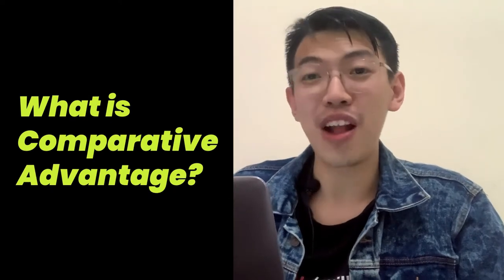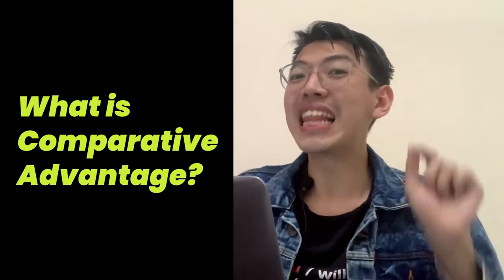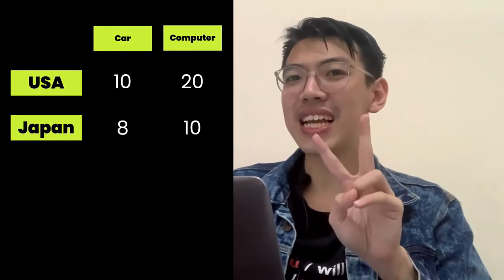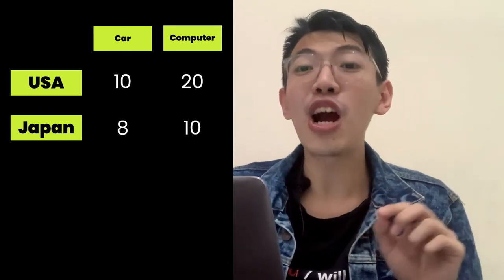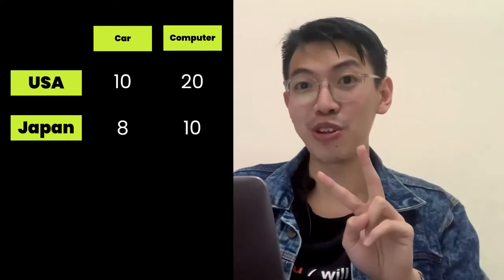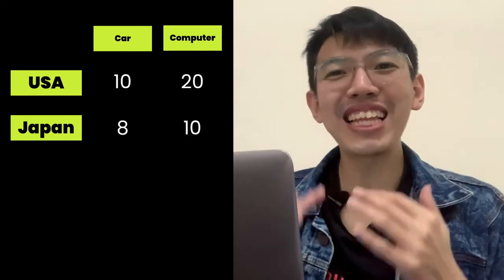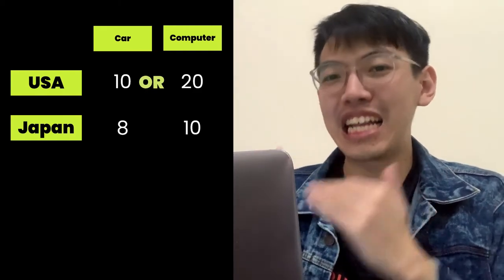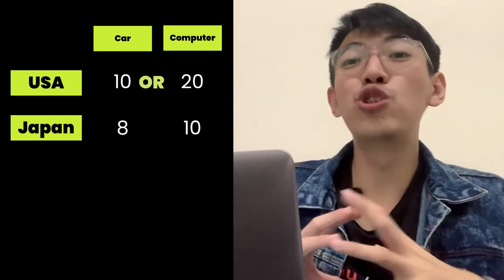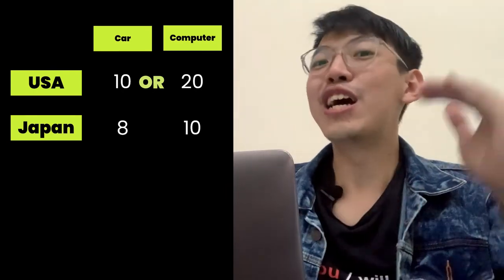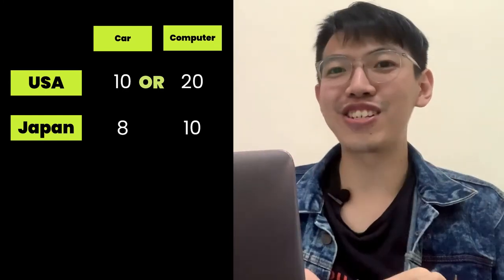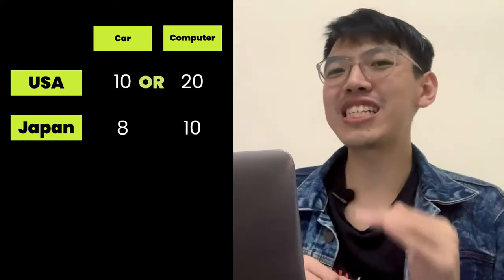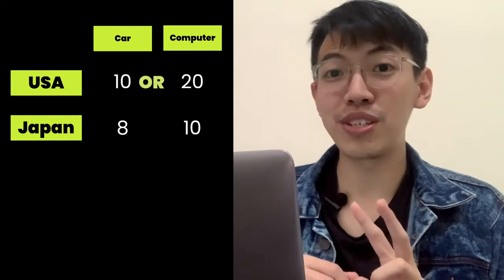What is comparative advantage? To make you understand better, let's see this illustration. Suppose there are only two countries — the United States and Japan — and there are only two goods: cars and computers. The data shows that the United States can produce either 10 cars or 20 computers in an hour. If the US uses all its time to produce cars, it produces 10 cars; if all time goes to computers, it produces 20 computers.